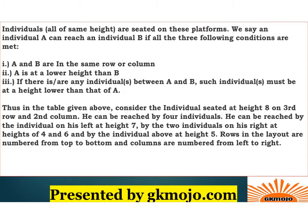Individuals of the same height are seated on these platforms. We can say that individual A can reach individual B if all three of the following conditions are met. Just assume this is a box, and this person A wants to reach over here — A can reach that position only if those three conditions are satisfied.